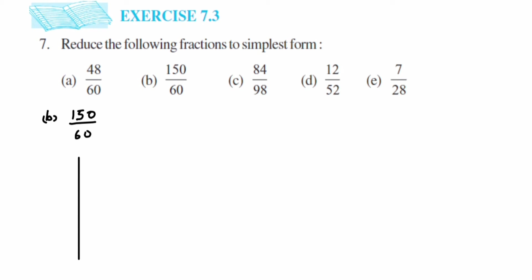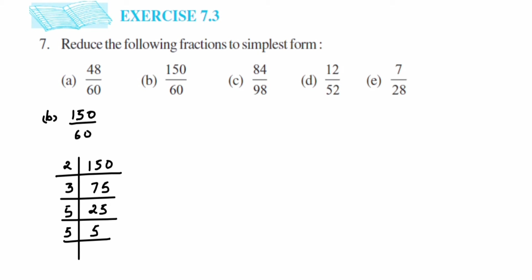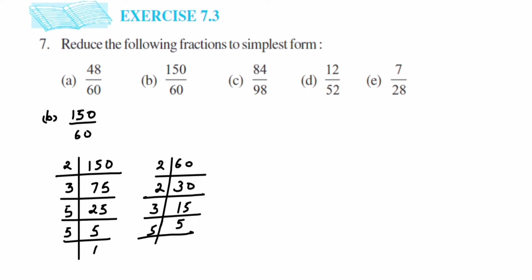Now moving on to the second problem: 150/60. For 150, it's an even number, so I'll start with 2: 2 × 75 = 150. Then 75 goes in the 3 table: 3 × 25 = 75. Then 5 × 5 = 25, and 5 × 1 = 5. For 60: 2 × 30 = 60, 2 × 15 = 30, 3 × 5 = 15, and 5 × 1 = 5.